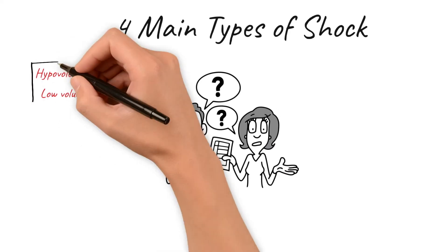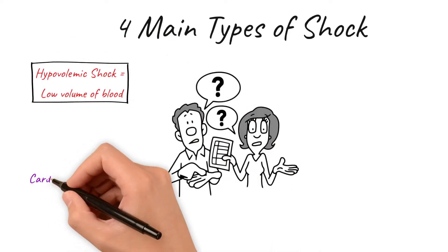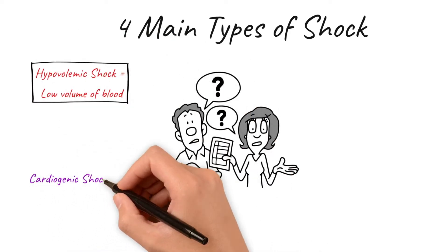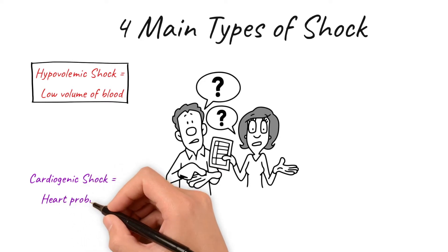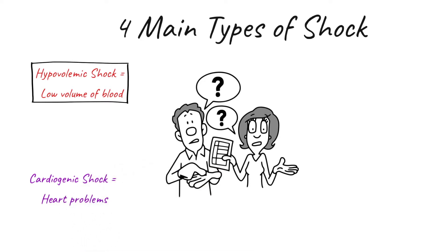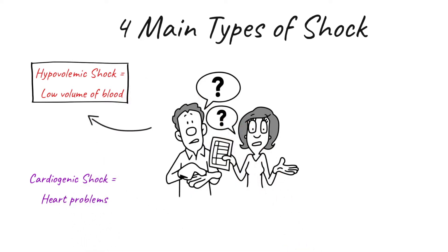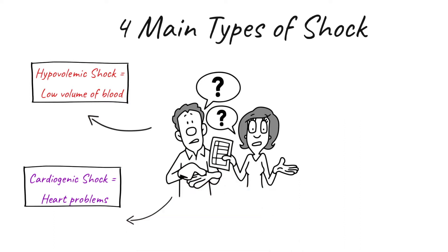Then we have cardiogenic shock. This is caused by a failure of the heart to pump correctly. It's a heart problem and it's normally due to damage to the heart muscles through an MI or through a cardiac valve problem.